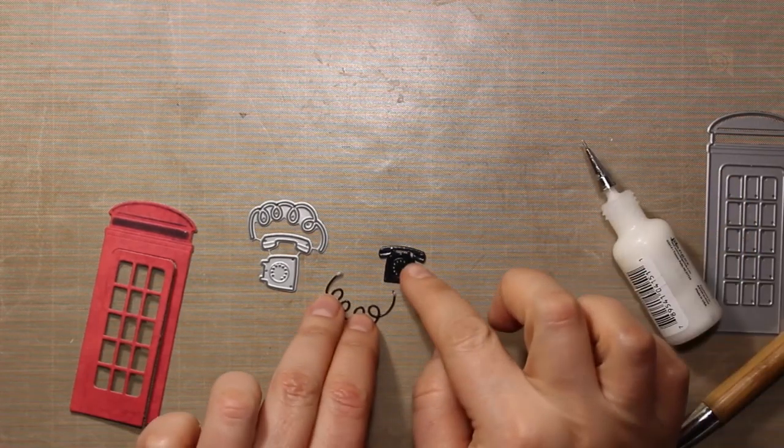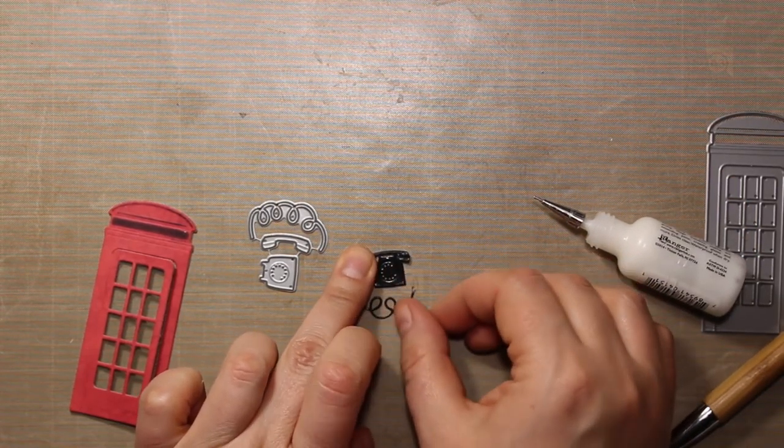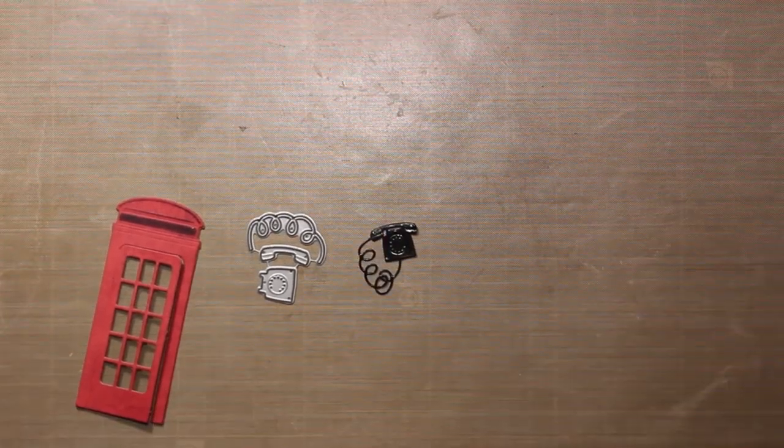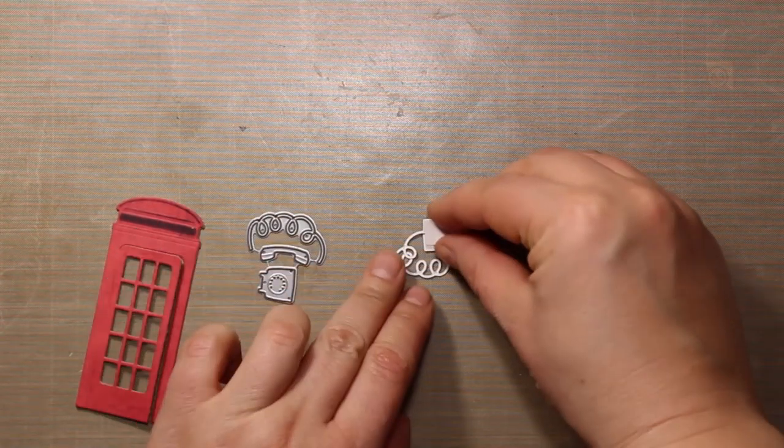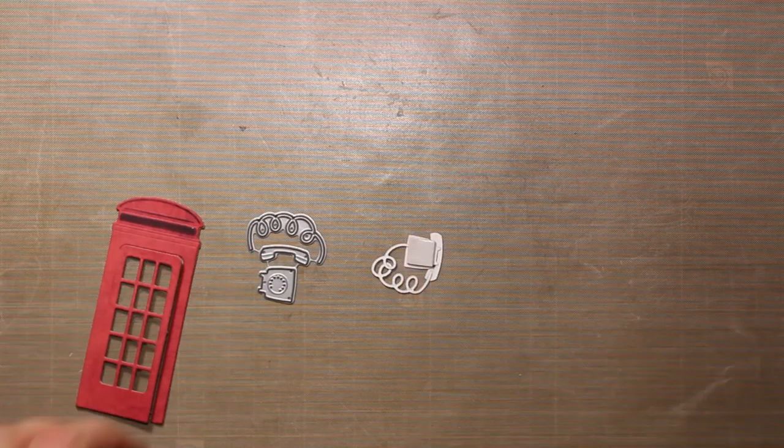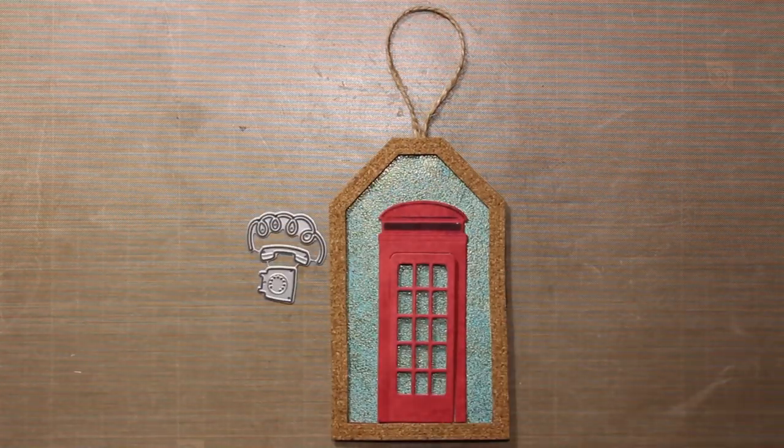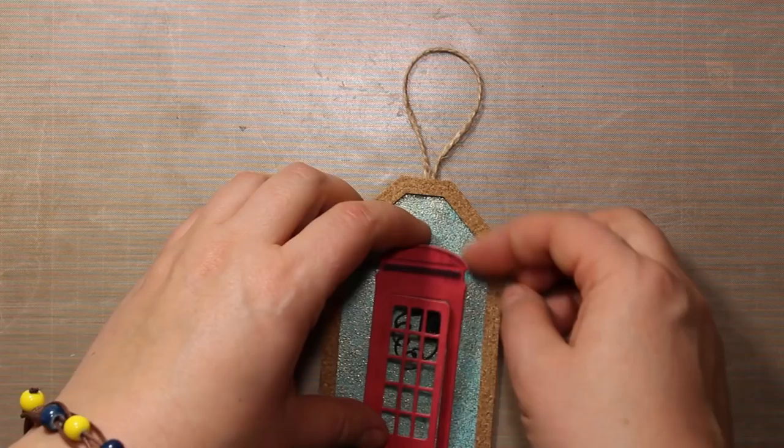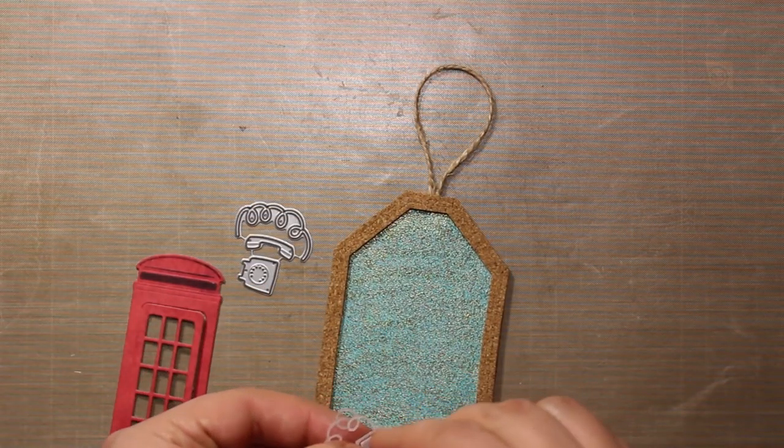This small die is called Rotary Phone, also by Poppy Stamps. I've die cut it out of glossy black cardstock and now I am assembling the image with a little bit of liquid glue.